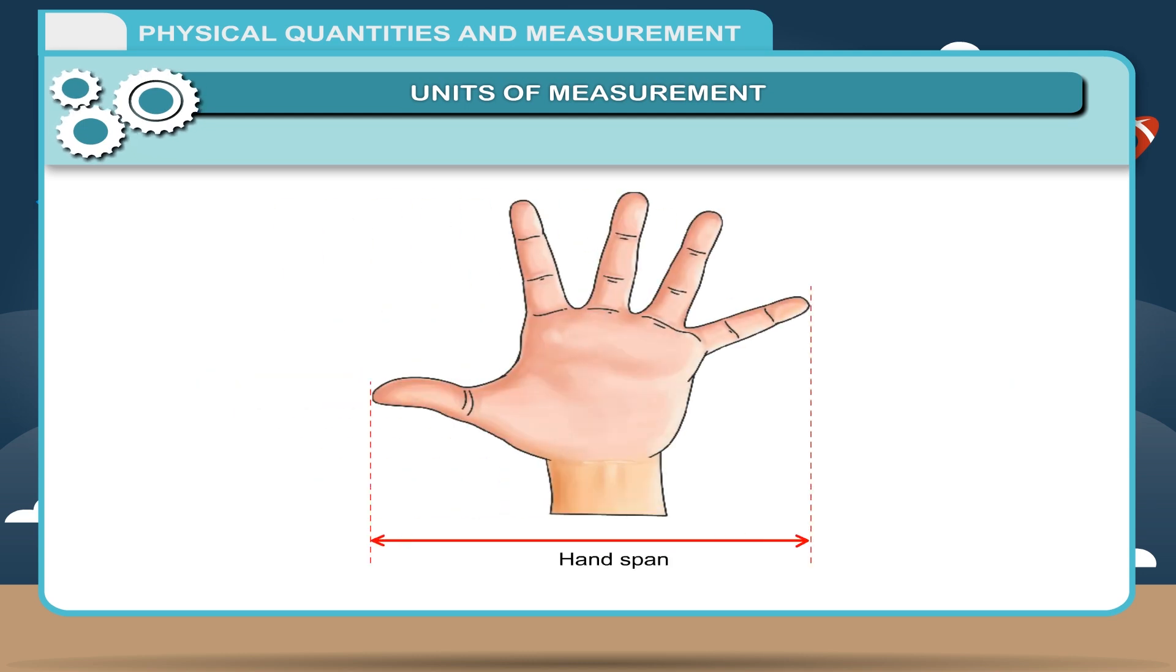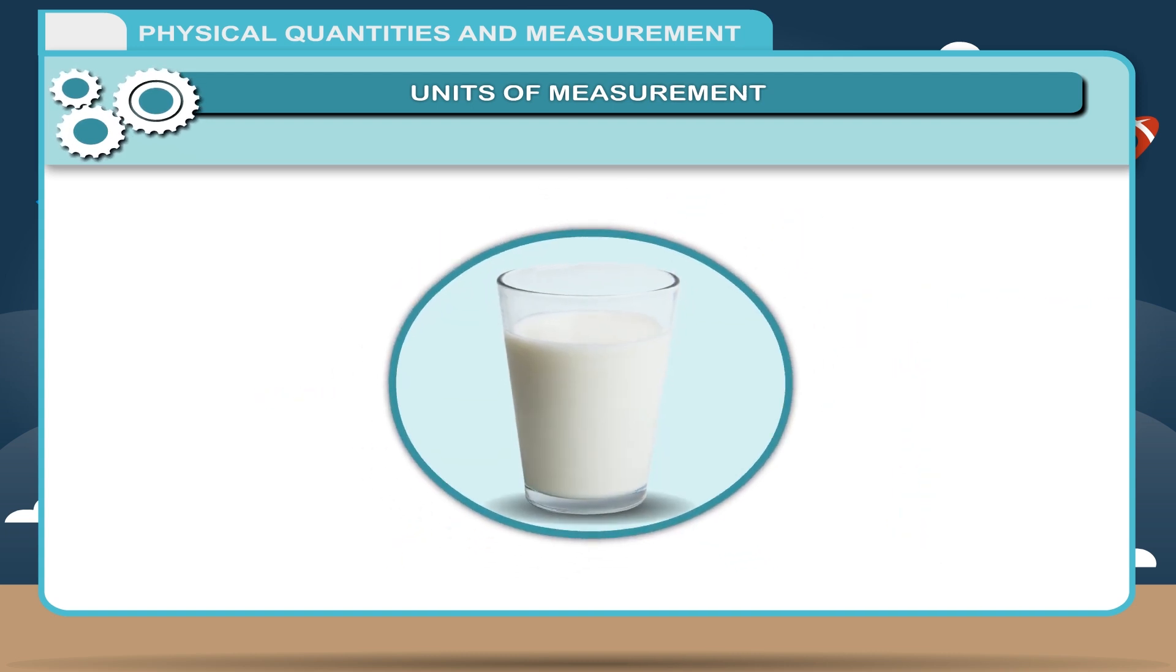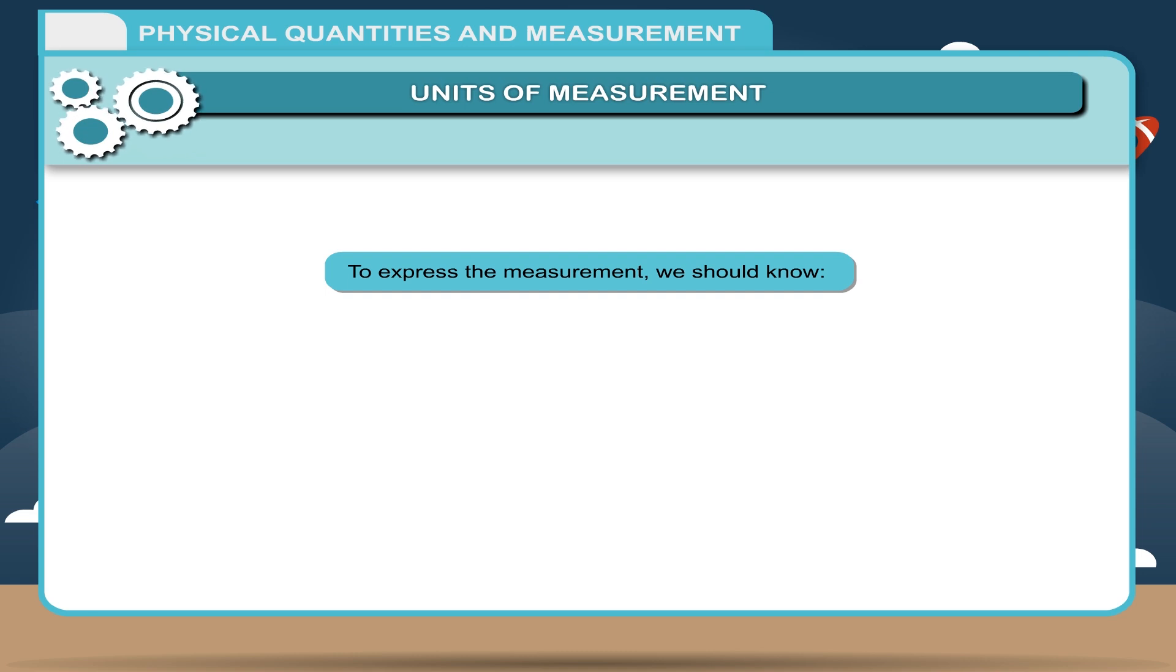Similarly, a hand span was the length from the tip of the thumb to the tip of the little finger. These methods were inaccurate because the size of fingers differ from person to person. In the same way, one cannot use a glass to measure the exact volume of the liquid. Such a system of measurement was not correct.